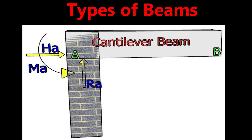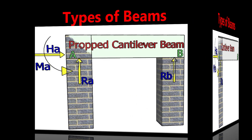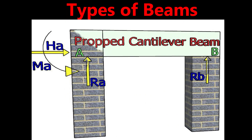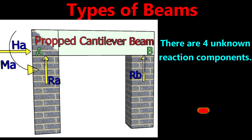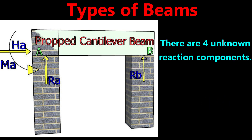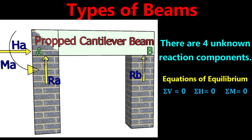The final type is the propped cantilever beam. In a cantilever beam, one end is fixed and the other is free. If a support — simple or roller — is provided to the free end, it becomes a propped cantilever beam. One end is on a fixed support and the other is on a roller or simple support. There are three unknown reaction components at the fixed end and one at the roller or simply supported end, giving four total. These cannot be determined by equilibrium alone, making it statically indeterminate. This type is seen in balcony supports and aircraft wings.